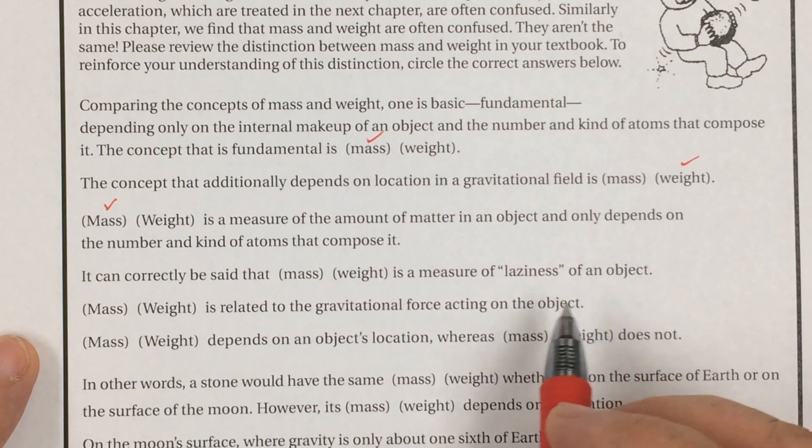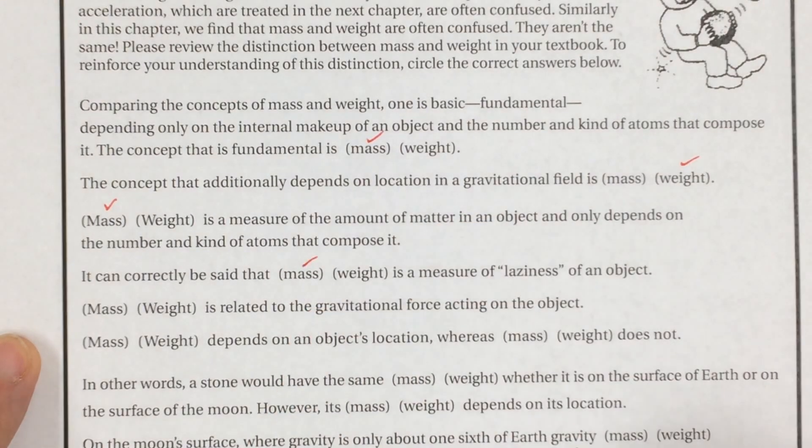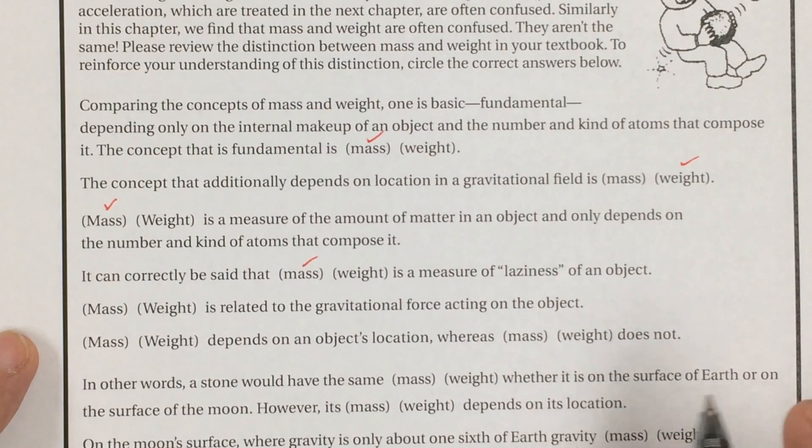Which one is a measure of the laziness of the object or otherwise called inertia? Inertia is based upon which? Its mass or its weight? Its mass. The more massive you are, like a bowling ball, the harder it is to get it to move. That has high inertia. Once it's moving, it's harder to stop it. That's because it has high inertia. A baseball would have lower inertia.